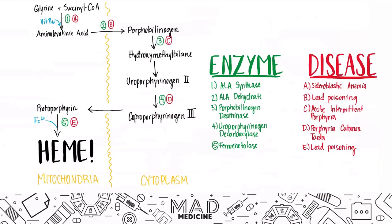This slide is going to be very important. You need to understand the steps taken to produce heme. The whole process takes place in both the mitochondria and the cytoplasm. There are two main substrates you need to produce heme: vitamin B6 and iron. Without these two, you're not going to get proper production of heme.